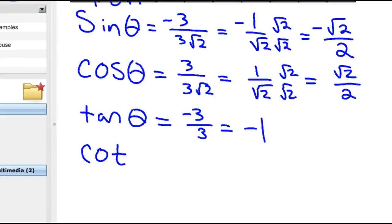Cotangent is the reciprocal of tangent, which would be 3 over negative 3, which would still be negative 1.